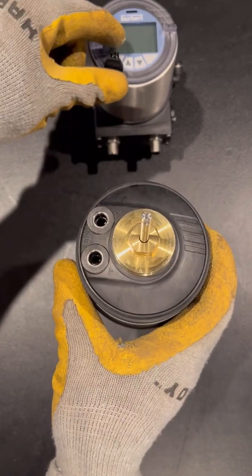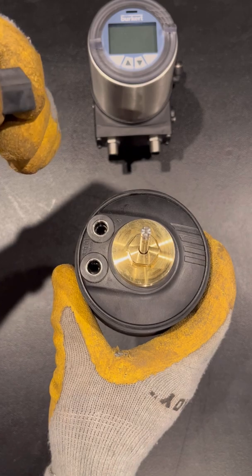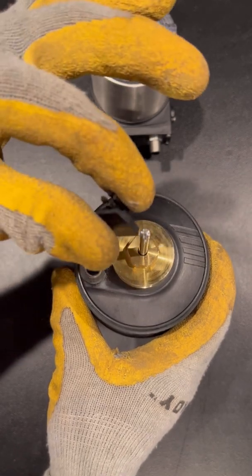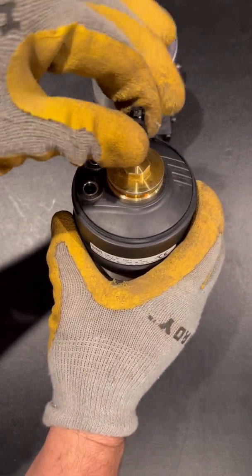Now take the sensor puck that was included with the positioner with the tapered side facing up and slide it through the spindle until it snaps on.